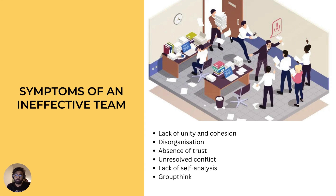The following are symptoms of ineffective teams. First, lack of unity and cohesion, identified by a lack of small talk amongst colleagues. Second, disorganization — team members are unaware of their responsibilities, usually caused by a lack of communication. Third, absence of trust, another consequence of a lack of communication, but also due to unresolved conflicts between team members. Fourth, lack of self-analysis, identified by a lack of self-awareness of team members. Fifth, groupthink, which will be explained further in the upcoming slides.